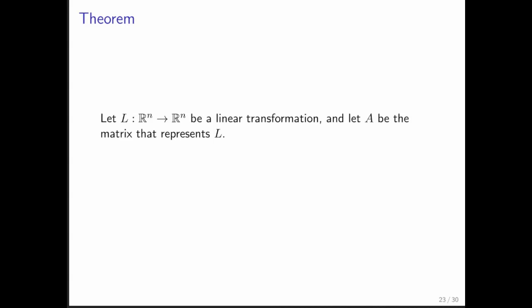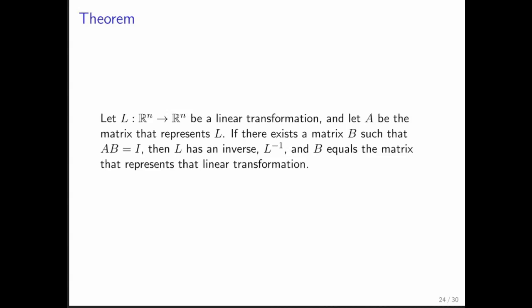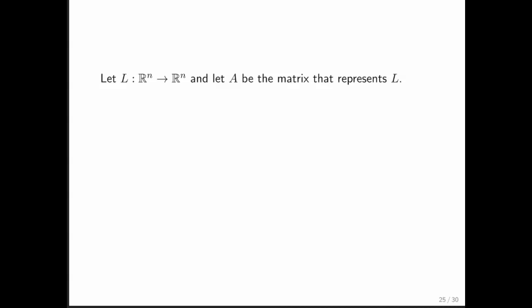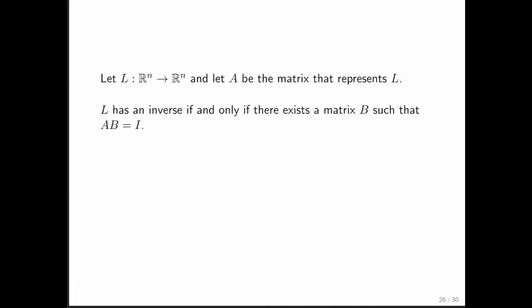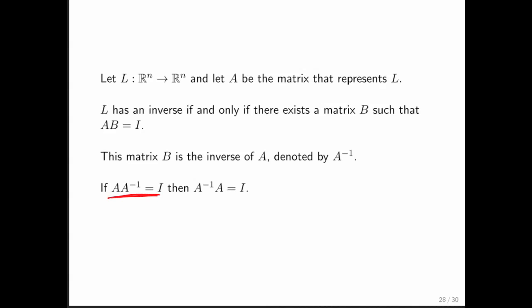Why? Because matrix-matrix multiplication represents composition of the corresponding linear transformations. So here's a theorem. It says that if L is a linear transformation and A is the matrix that represents it, then if there is a matrix B such that A times B is equal to the identity, then L has an inverse and B is the matrix that represents that linear transformation that is the inverse. So what does that mean? That means that if L is a linear transformation and A is a matrix that represents L, then L has an inverse if and only if there exists a matrix B that is the inverse of A.